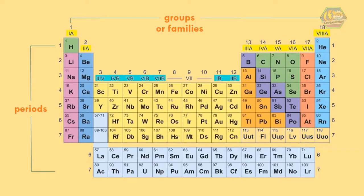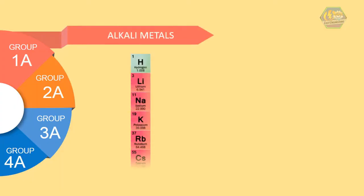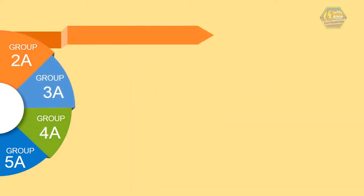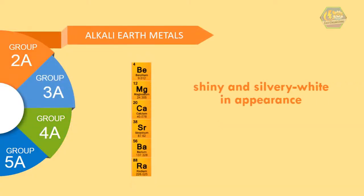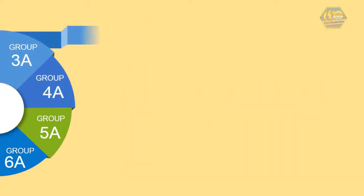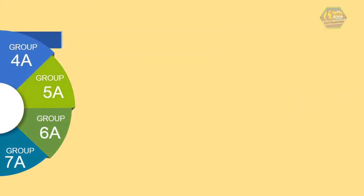The trivial names are: Group 1A is called alkali metals, which are very reactive and electropositive. Group 2A is called alkaline earth metals, which are all shiny and silvery white in appearance and somewhat reactive metals at standard temperature and pressure. Group 3A is called triels, which are characterized by having three valence electrons.